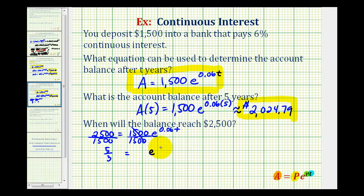Equals e raised to the power of 0.06t. Now to solve this for t, we'll take the natural log of both sides of the equation.